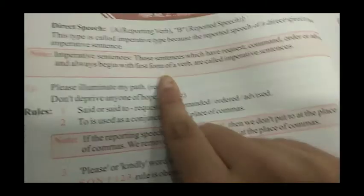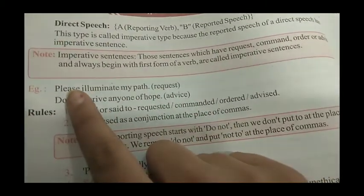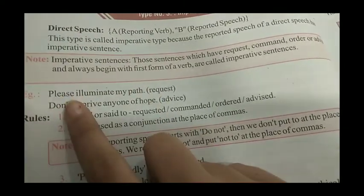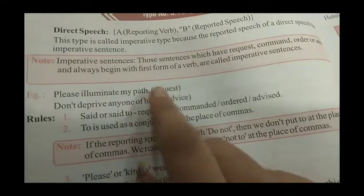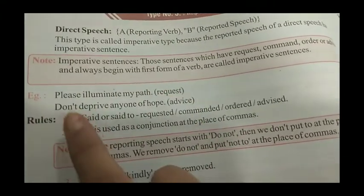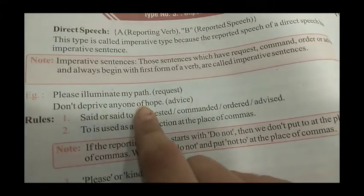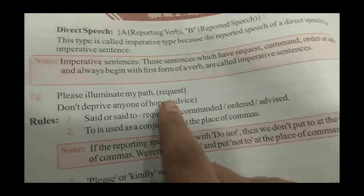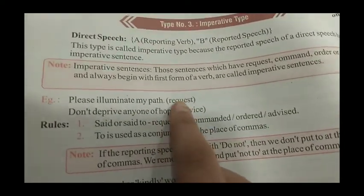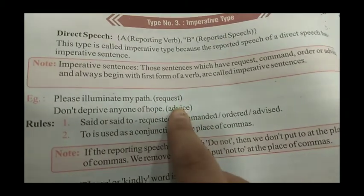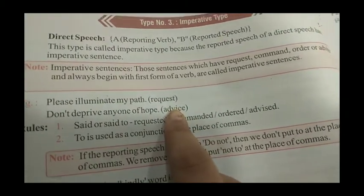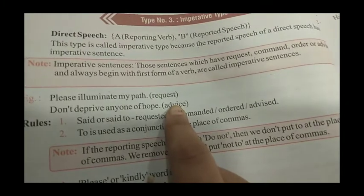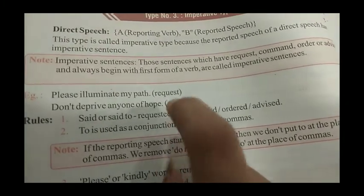For example: 'Please illuminate my path.' यहाँ पर please से ही पता चल रहा है that it is a request. 'Don't deprive anyone of hope.' So it is advice की ऐसा मत करो। तो जहाँ पर request, command, order या advice दिखे, वहाँ हम समझ जाते हैं that we are talking about an imperative sentence.